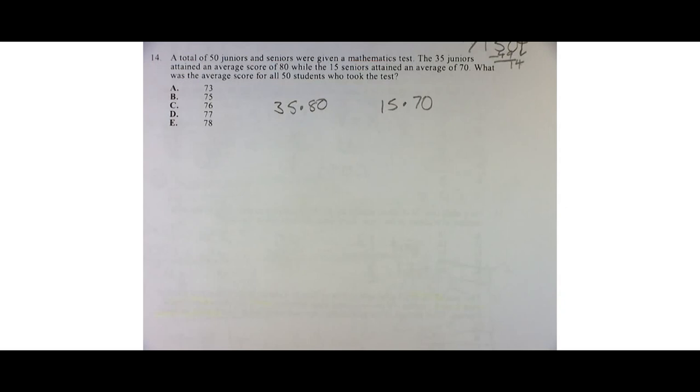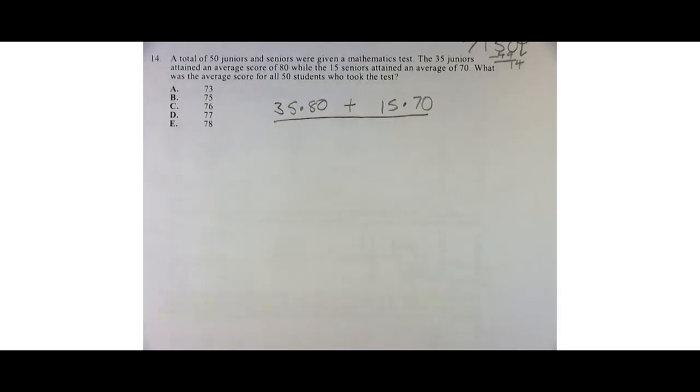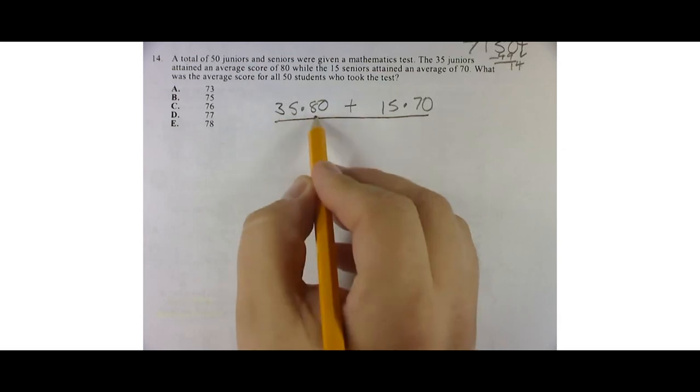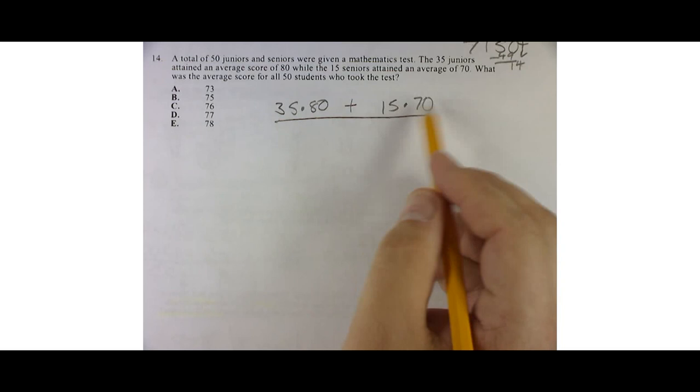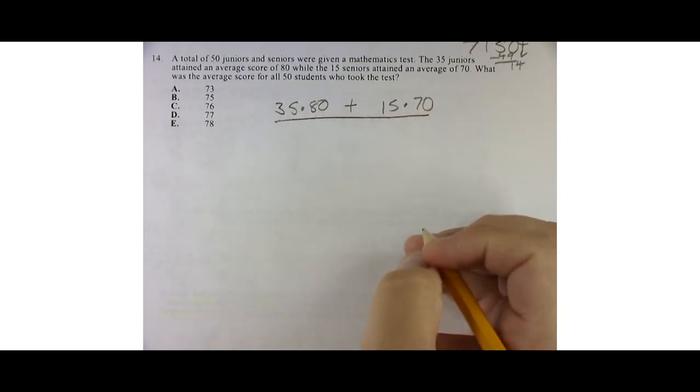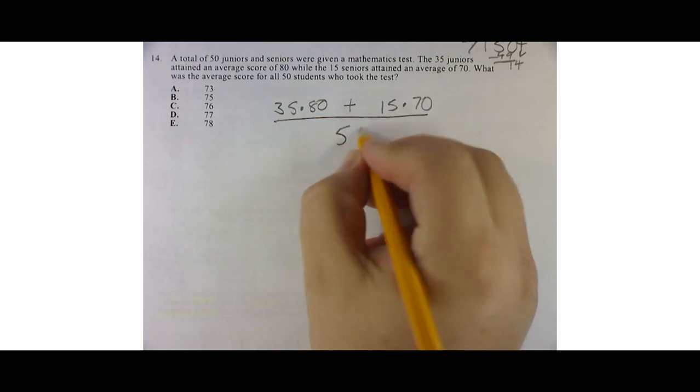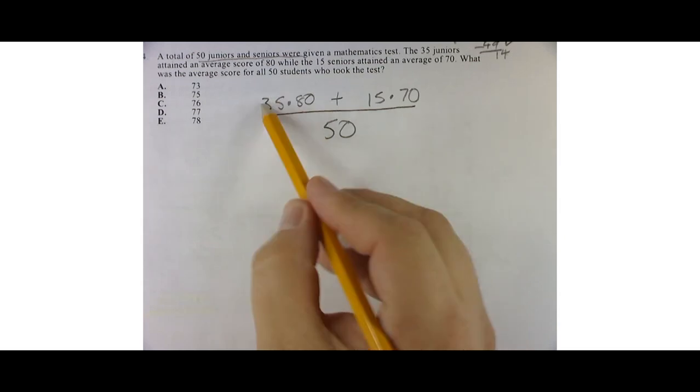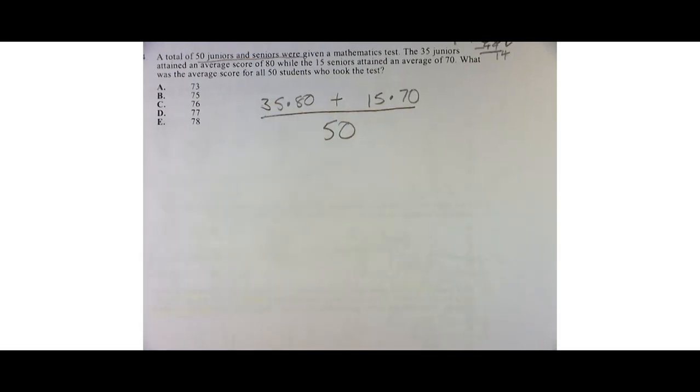What is the average score of all 50 students? So the average score of all 50 students is the sum of all the scores. I had 35 students that were juniors, and they all had 80s. And then I have 15 seniors who obtained an average of 70. So I had 50 students total. Wait, 50 juniors and seniors. Yep, 50 because 35 plus 15 is 50. So now I just got to multiply all this up and divide it by 50 and see what I get.